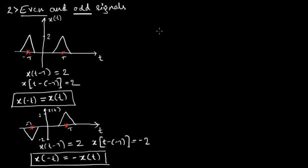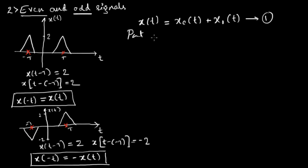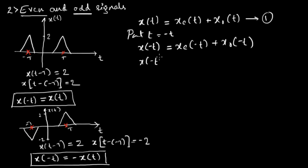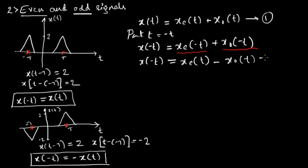Now let us write the equations for the even and odd parts of the signals. Consider an arbitrary signal x of t which consists of an even part x_e of t and an odd part x_o of t — call this equation 1. In equation 1, put t equal to minus t, and it becomes: x of minus t equals x_e of minus t plus x_o of minus t. Based on our understanding, x_e of minus t equals x_e of t, and x_o of minus t equals minus x_o of t — call this equation 2.